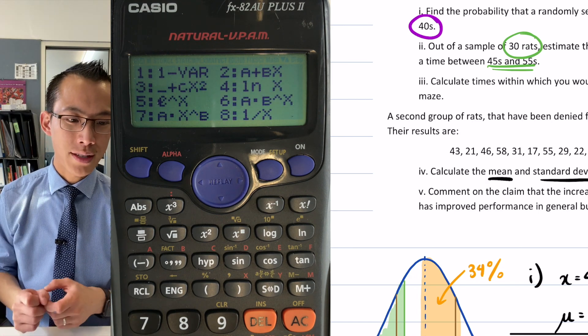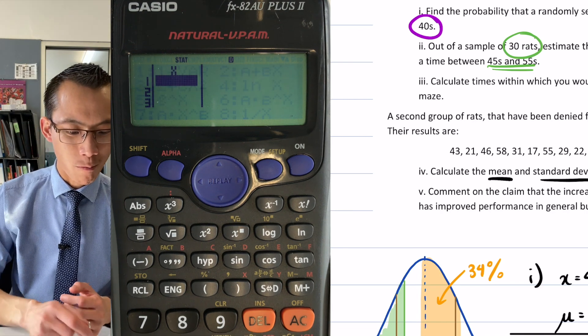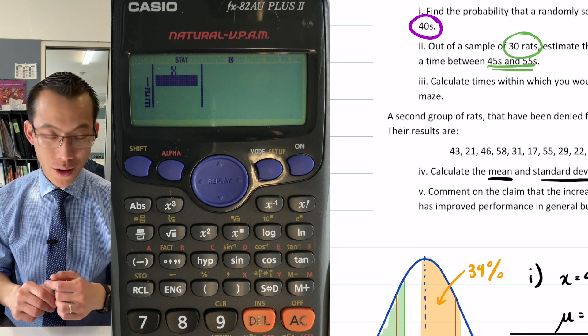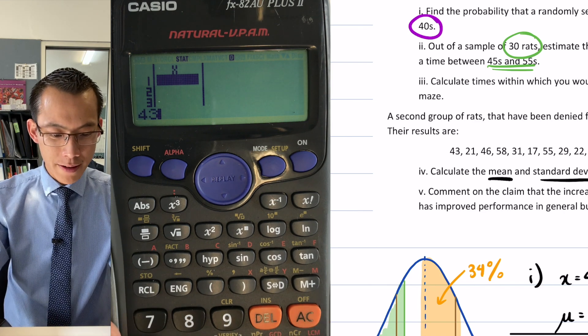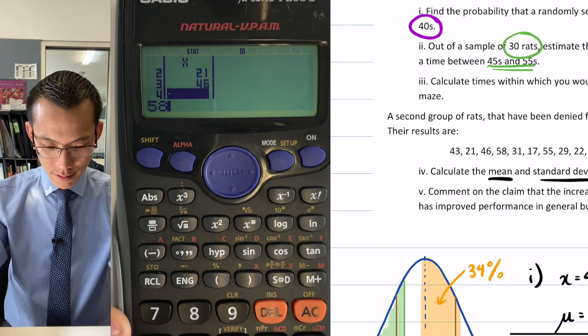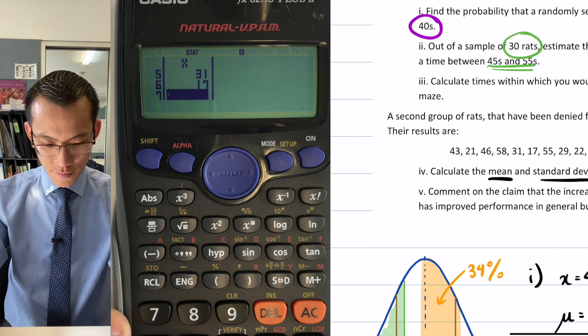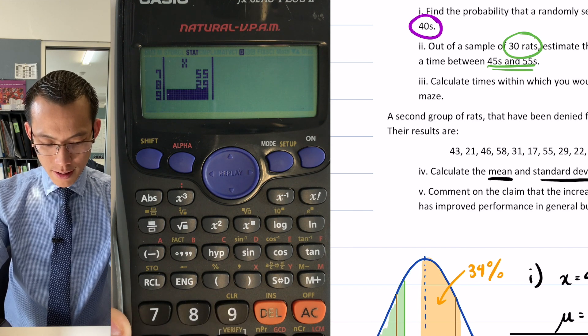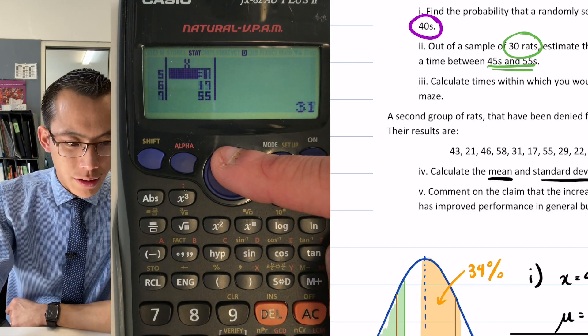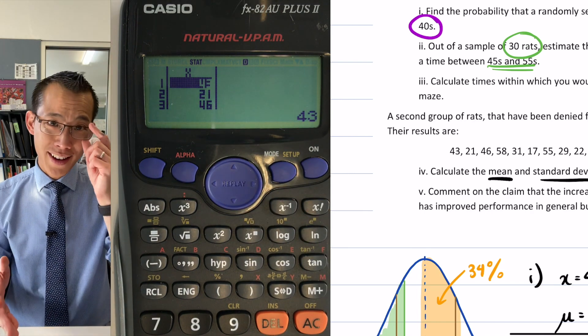And then when you have a look at this, I've only got a single variable, so I'm going to go for one-variable. And so there's X, which is going to be our times. So I'm going to go ahead and go to the list of numbers and input them: 43, 21, 46, 58, 31, 17, 55, 29, 22, and 19. I'll just do a quick double-check to make sure that I have entered all of those. They look good. Okay, fantastic, so all my data is now entered.